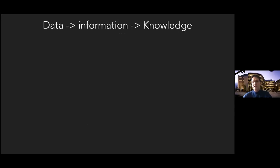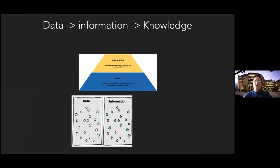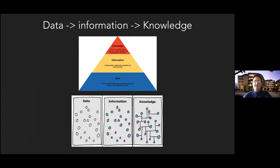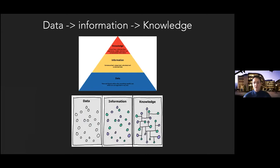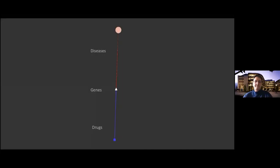The way we're trying to approach this is from a knowledge generation perspective. We are based on the tenet that data leads to information, and that information leads to knowledge. Data is about the raw numbers. Information is really the context in which you put that. And knowledge is when you start putting things together. So it really makes sense that we try to merge sources of information to represent current knowledge, and perhaps to infer new knowledge.